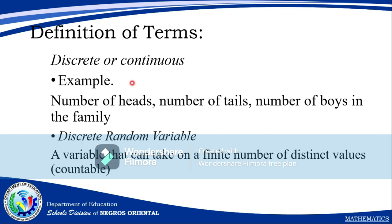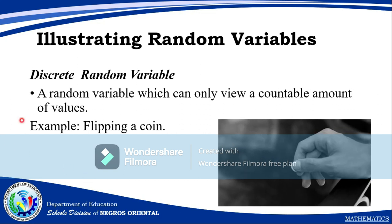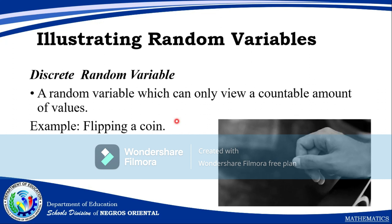Discrete or continuous random variables — let's recall. Examples of discrete random variables include number of heads, number of tails, and number of boys in a family. A discrete random variable is a variable that can take a finite number of distinct values — meaning they are countable.